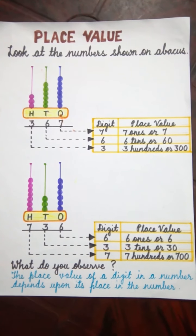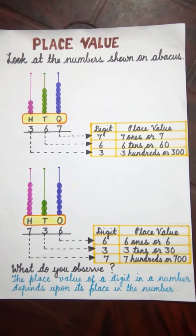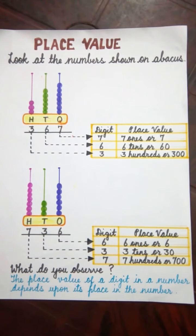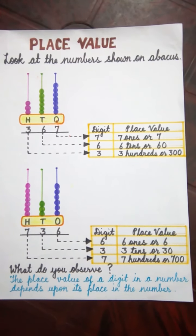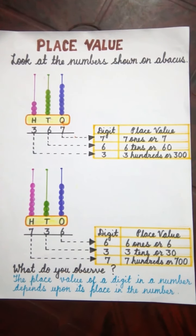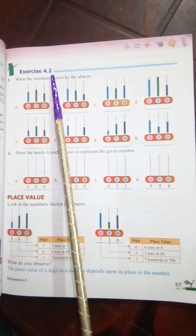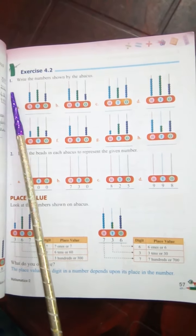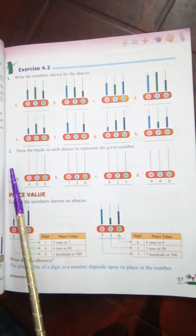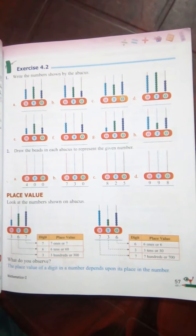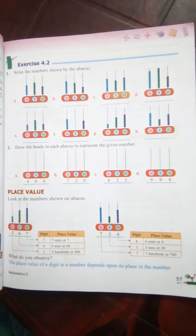Children, today's homework is page number 57, Exercise 4.2. You have to do question number 1 and 2 in the maths book. And children, if you don't have the maths book, you can do this work in your old or rough notebook.